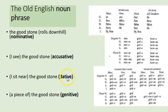The dative case is a more complex one because it combines a few things in Old English that are somewhat separated in modern English. One is the indirect object — 'I give a nice shine to the good stone' takes the dative case, and it comes from the Latin word 'dare,' meaning 'to give.' So think about giving something to something else and that encapsulates the idea of the indirect object. The dative is also used as the object of many prepositions — 'by something,' 'for something,' 'with something,' 'to something' — that something is often going to be in the dative case.